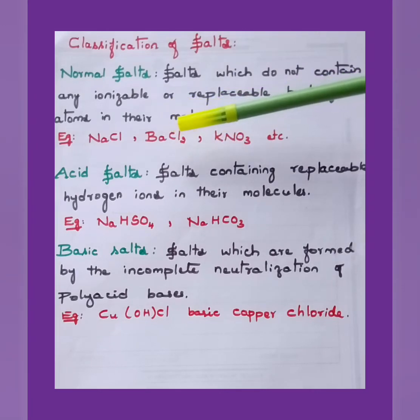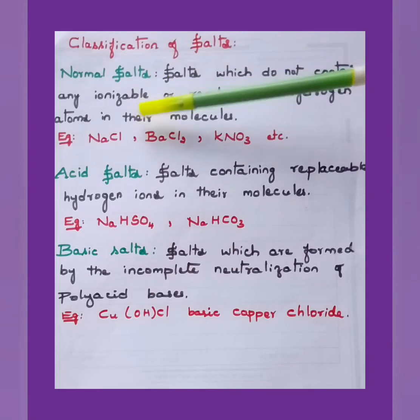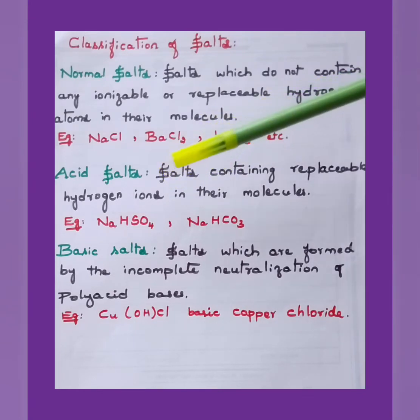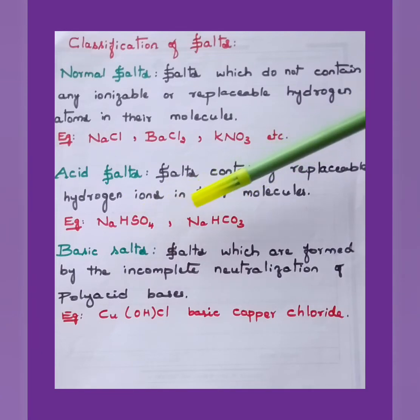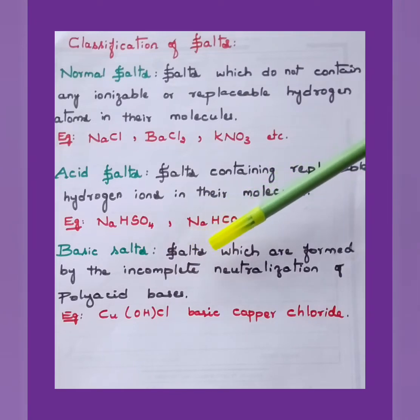These are normal salts. When the acid reacts with the base, without any H+ ions or replaceable hydrogen atom, they are just obtained. In case of acid salts, salts containing replaceable hydrogen ions in their molecule are called acid salts. Here you can observe H. NaHSO4, that is sodium hydrogen sulfate, NaHCO3 sodium bicarbonate. These are acid salts. In case of basic salts, salts which are formed by the incomplete neutralization of polyacid bases are called basic salts. That is CuOHCl, basic copper chloride.